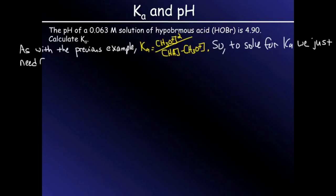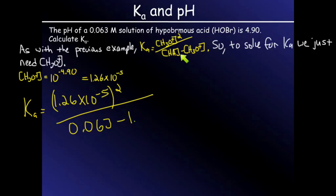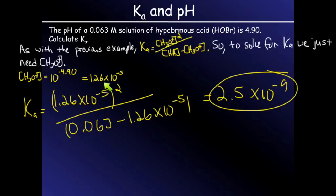So we just simply need to solve for the hydronium concentration to get Ka. We can get the hydronium concentration from the pH that has been given to us. If we take 10 to the negative pH we'll get our hydronium concentration. We can then plug that into our Ka expression in order to get our Ka value.